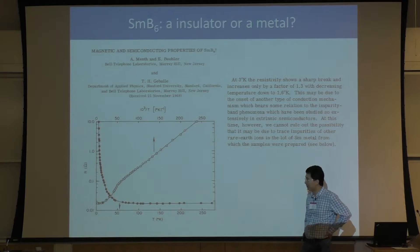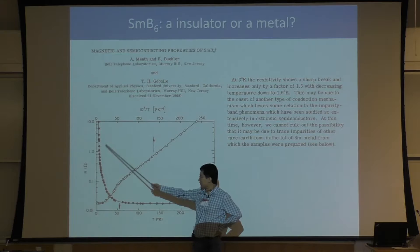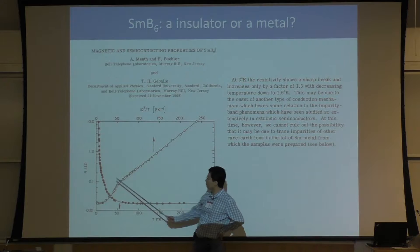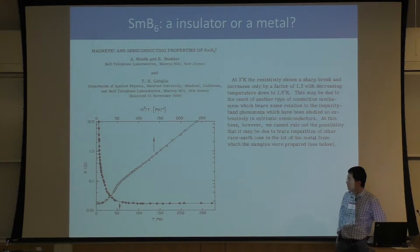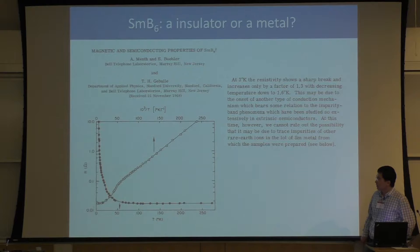In this paper, these three gentlemen measured the resistance of the material. They found that when you go to lower and lower temperature, the resistance shoots up and diverges to infinity. This curve fits very well the exponential 1/T behavior — that's a standard textbook behavior for an insulator. Based on this figure, they concluded that SMB6 is an insulator.